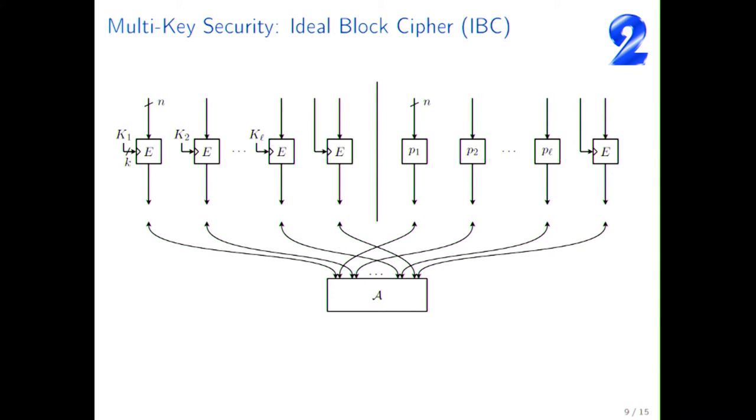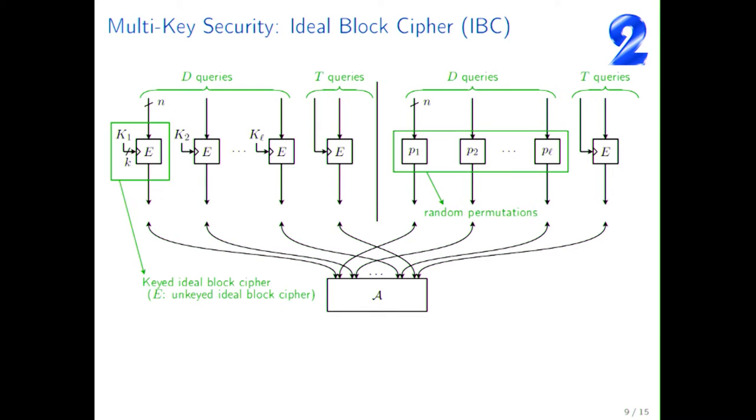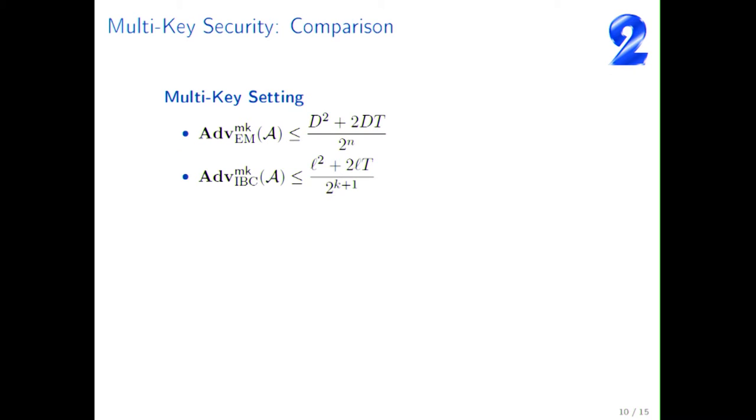And then we looked at the ideal block cipher as well, and analyze security in the same multi-key setting. So it's the same thing you have here, but now this source of randomness, this E, is going to be the unkeyed ideal block cipher. So you now, as an adversary, can not only choose the plaintext, but also can choose the key. And then if you're going to distinguish between these two worlds, you find an expression that is quite similar, if you construct a proof, which is given here. So let's look now at this in detail.